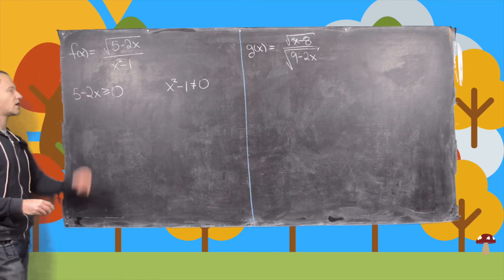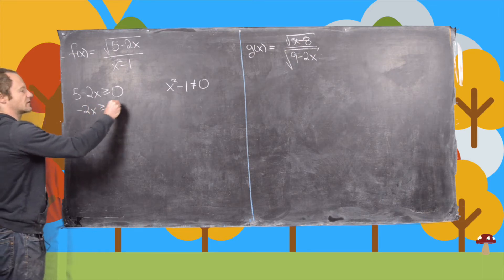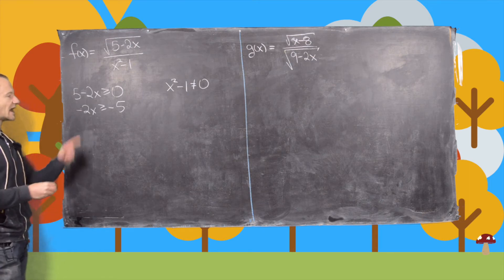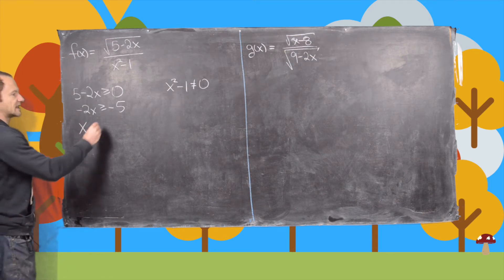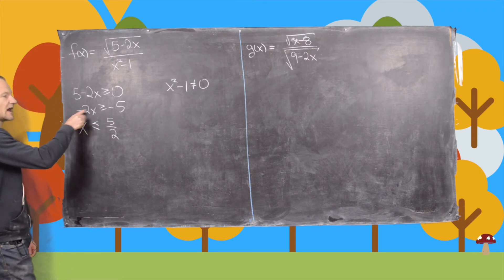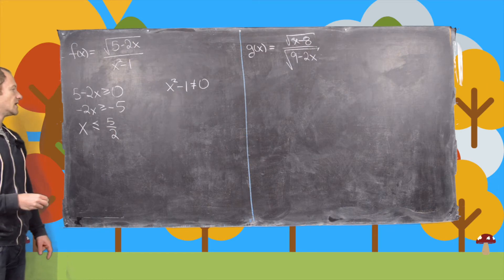So now we can solve each of these. Here this gives us negative 2x is bigger than or equal to negative 5 just by subtracting 5 on both sides. Now we can divide by negative 2 and that's going to give us x of 5 halves. And since we divide by a negative 2, this flips into a less than or equal to instead of a greater than or equal to.